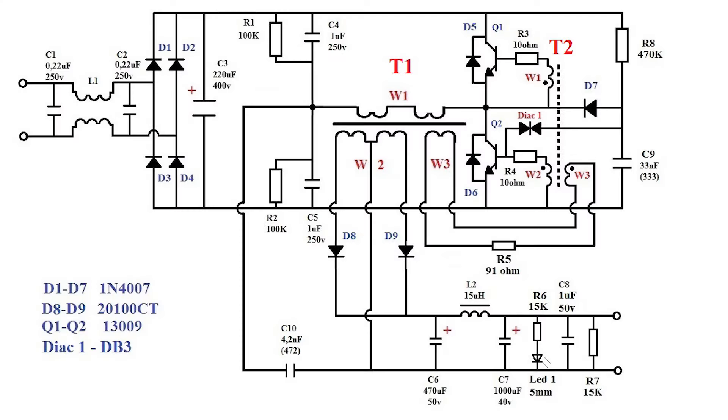The power supply circuit looks like this. On the left is an alternating mains voltage of 220 volts, and on the right at the output we get a constant voltage of 42 volts.